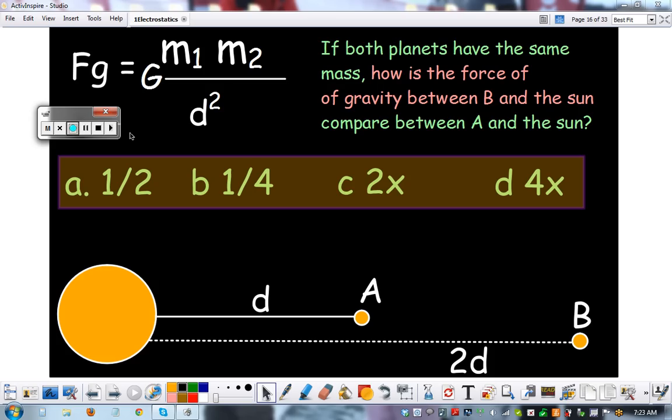Planet B is twice the distance from the sun as planet A. How does gravity between B and the sun compare to between A and the sun? First thing you ask yourself: should it be stronger or weaker, and then how much? Pause the video and see if you can figure it out.